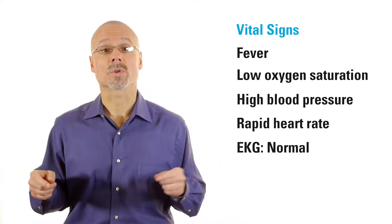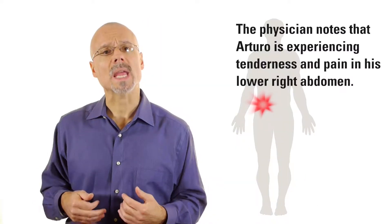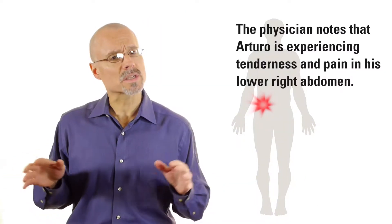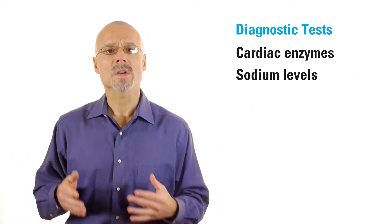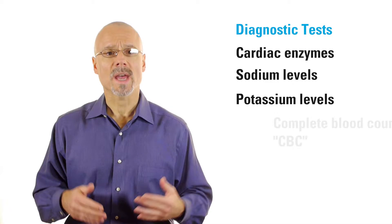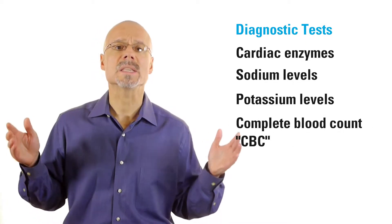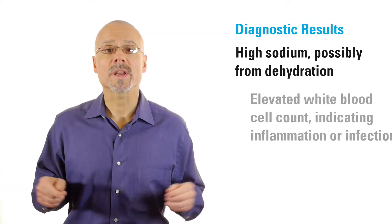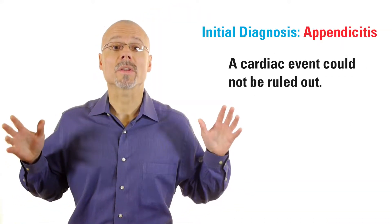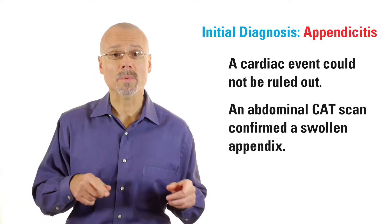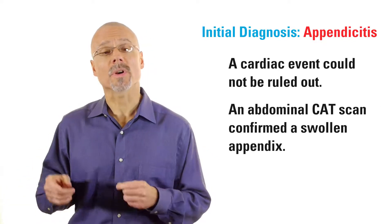At least his EKGs were normal. The emergency room physician noticed that Arturo had tenderness and pain in his lower right abdomen. Nothing else in the exam was remarkable. The physician ordered tests of Arturo's cardiac enzymes, sodium, and potassium levels, and a complete blood count, otherwise known as a CBC. Results showed high sodium, possibly from dehydration, and an elevated white blood cell count, indicating inflammation or infection. The initial diagnosis was appendicitis, but a cardiac event still could not be ruled out, so the physician ordered an abdominal CAT scan, which confirmed a swollen appendix.